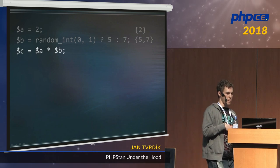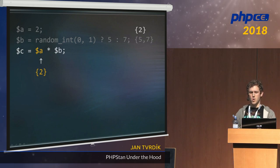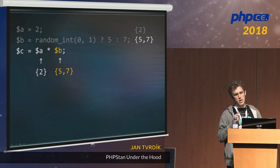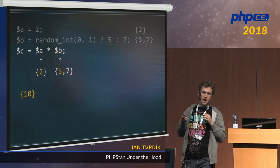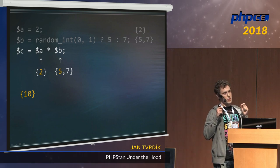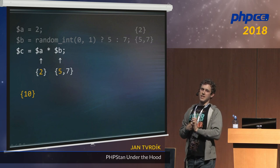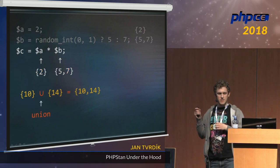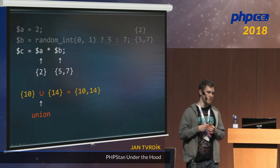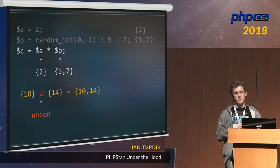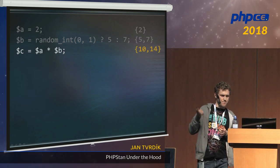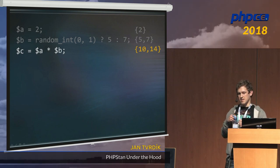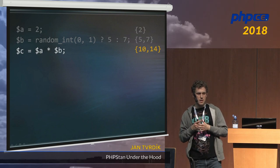Here's another example. We know the set of possible values for both the A and B variables. Because those sets are small, PHPStan can evaluate all possible combinations. It multiplies 2 and 5 to get a set with just {10}, then multiplies 2 and 7. It combines the results using union to determine that the set of all possible values for variable C is {10, 14}.